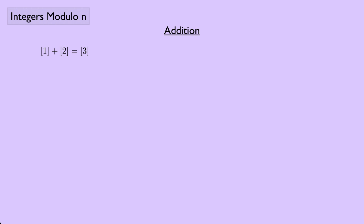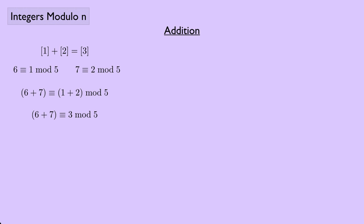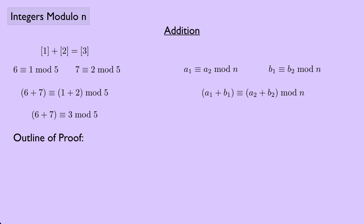Let's look at addition in more detail. We saw that [1] + [2] = [3], where 6 ≡ 1 (mod 5) and 7 ≡ 2 (mod 5), so 6 + 7 ≡ 1 + 2 (mod 5), which is 3. To generalize: if a₁ ≡ a₂ (mod n) and b₁ ≡ b₂ (mod n), then a₁ + b₁ ≡ a₂ + b₂ (mod n). Let's outline the proof. From a₁ ≡ a₂ (mod n) we get n | a₁ − a₂, and similarly n | b₁ − b₂.